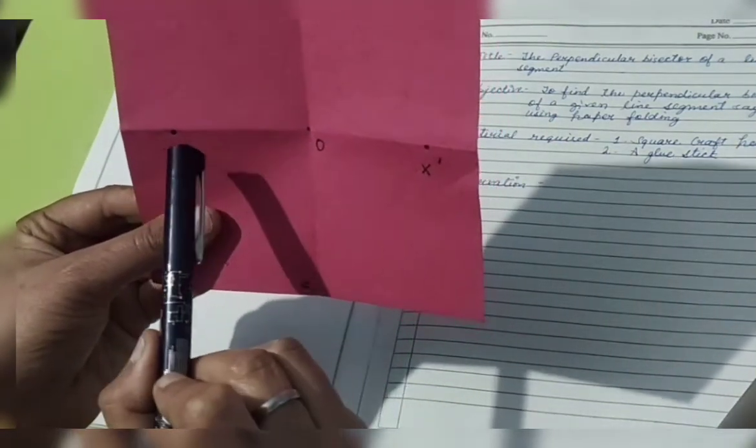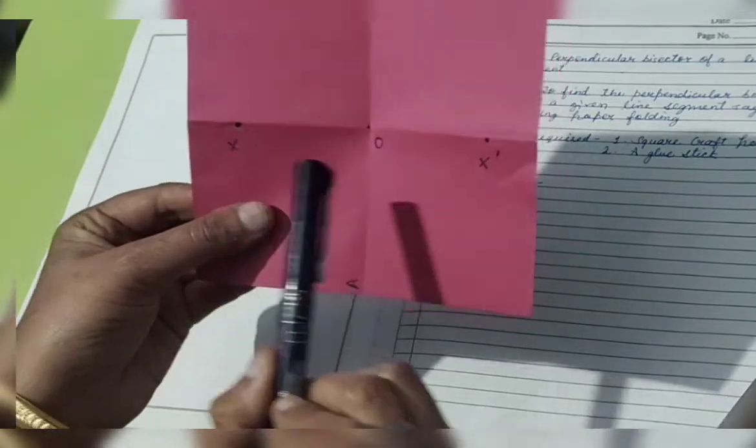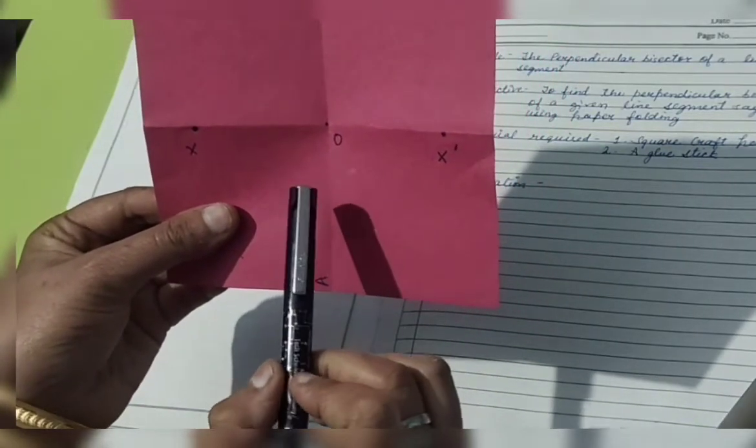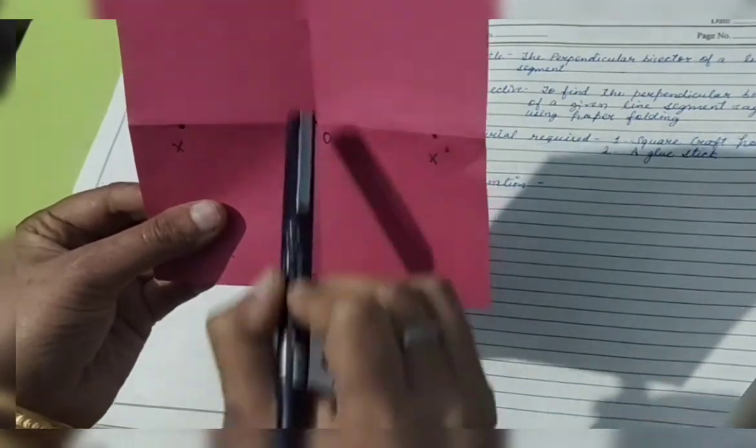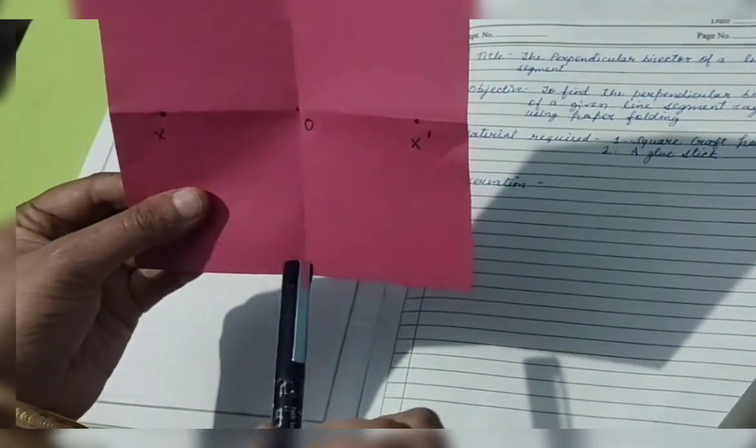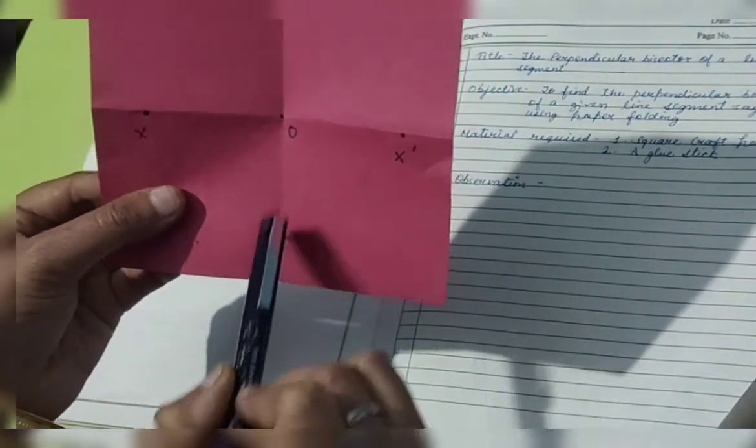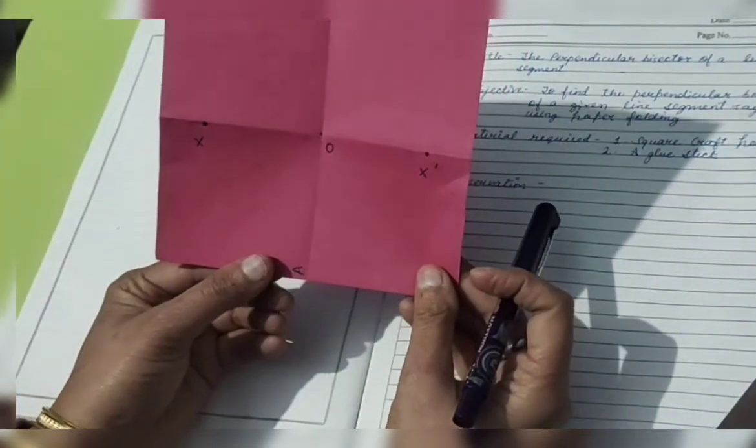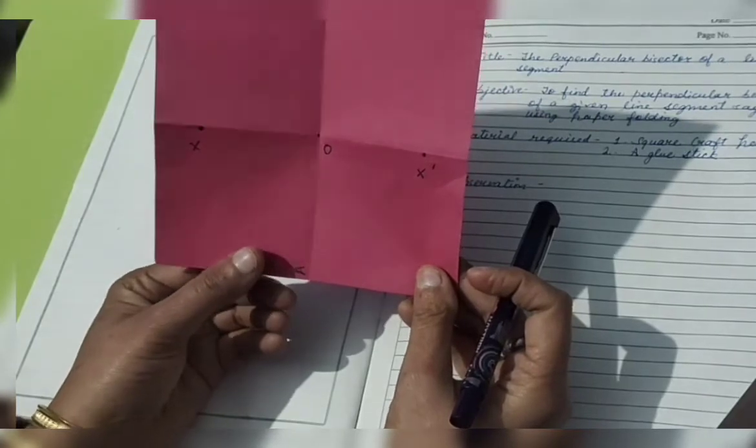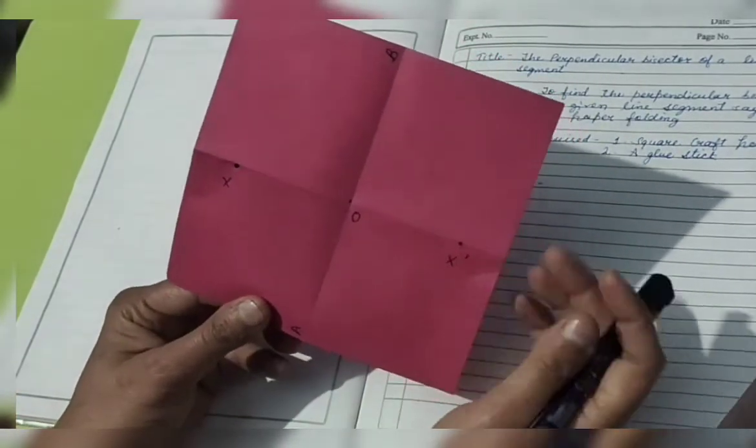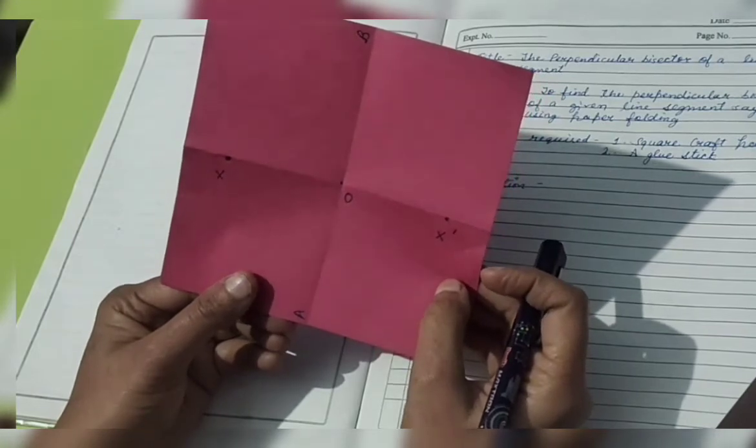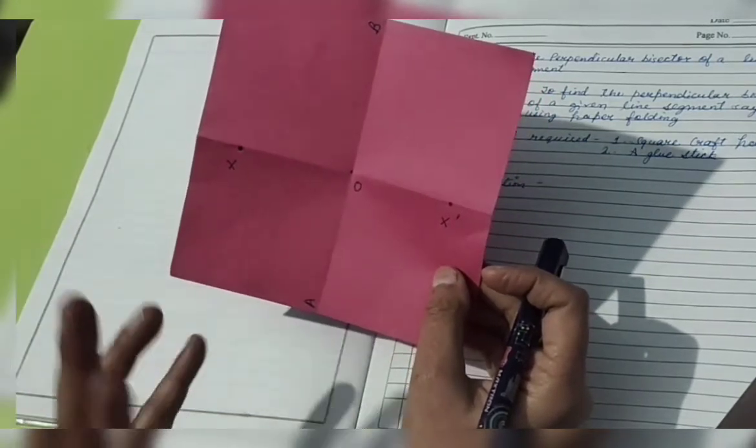So it means this X and X dash are equidistant from O. Means O is the midpoint of the line segment XX dash. What does it mean? It means this XX dash is a bisector, or you can say the AB is having the bisector as XX dash. What is the meaning of bisector? Means the line segment which divides another line segment in two parts - bisect. Bi means two segments, cutting.